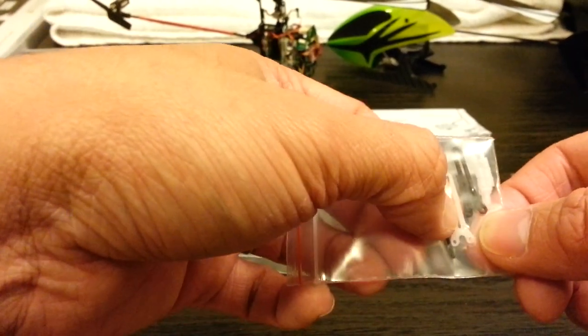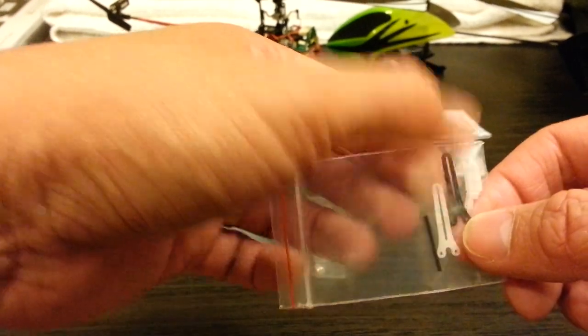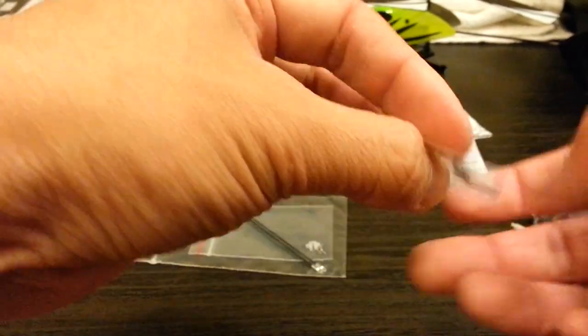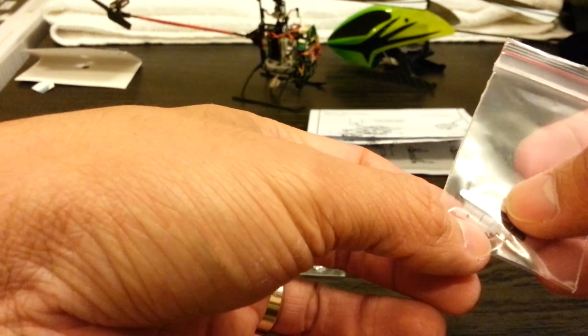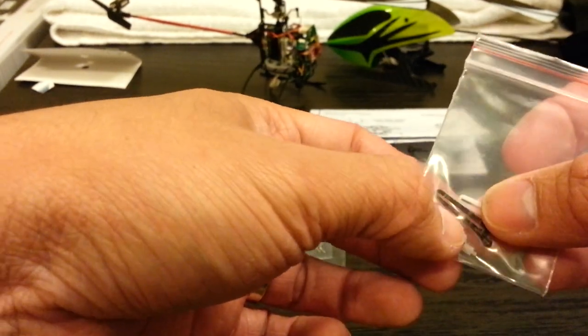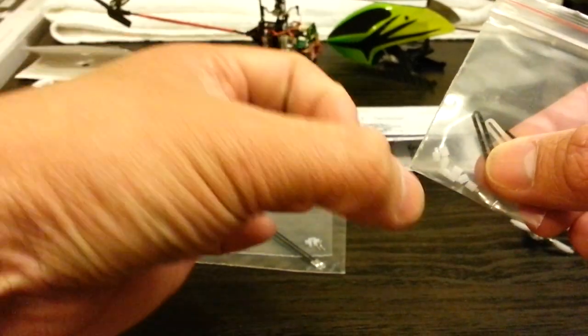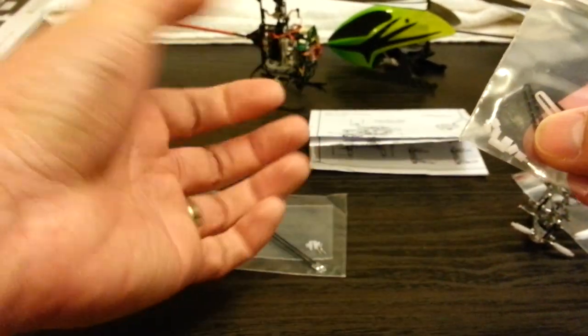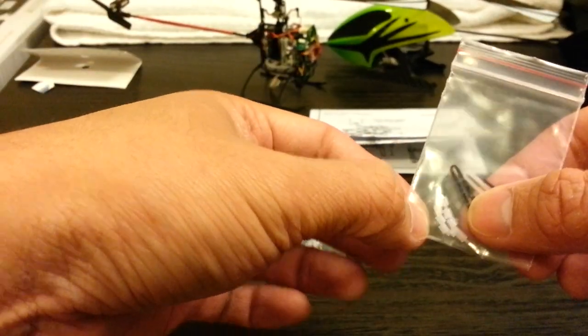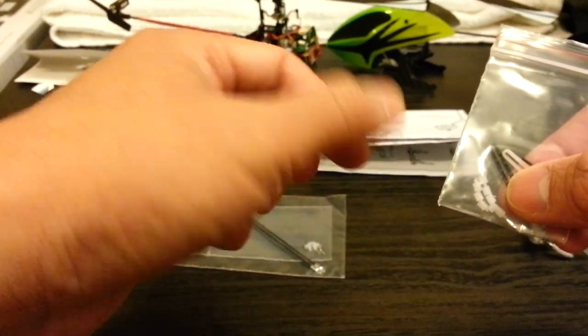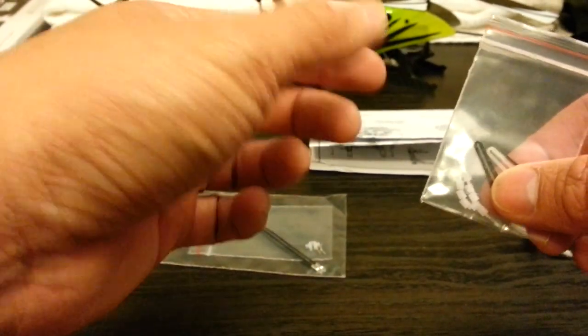You have one that's made out of Delrin and one that's carbon fiber. So depending on what you want to use, you have both, it's a win-win. And you also get these little spacers so when you're using the aftermarket brushless motor, it's the outrunner. It's going to be a bigger diameter than the stock motor. So what these spacers do is they space the servos out farther to give you more clearance between the motor and the servo.